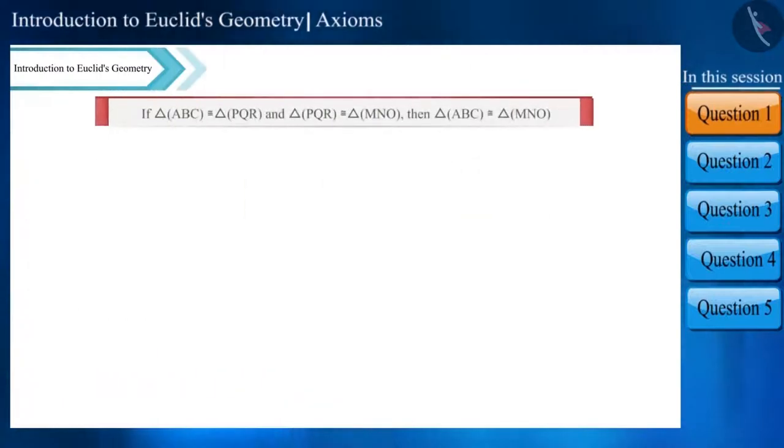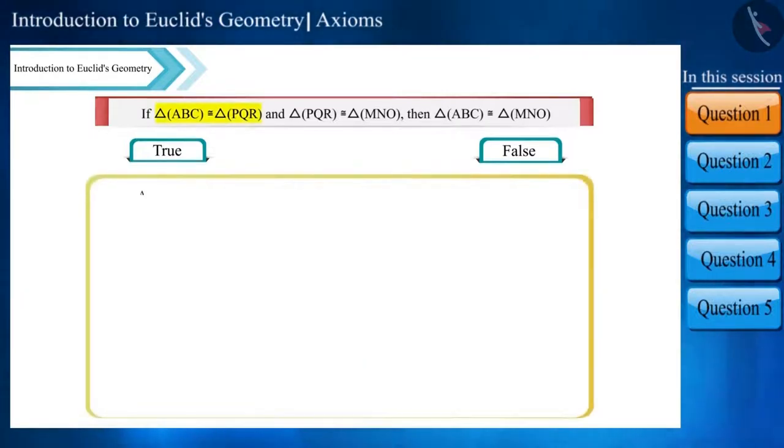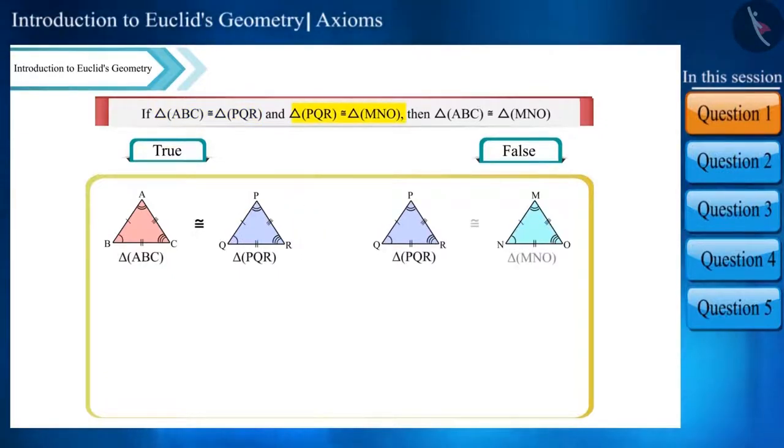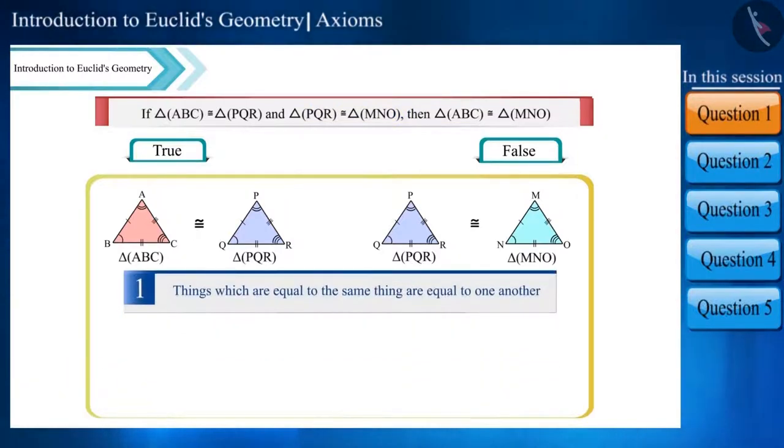Let's start with the question: Is the given statement true or false? In this, triangle ABC is congruent to triangle PQR, and triangle PQR is equal to triangle MNO. According to Euclid's first axiom, things which are equal to the same thing are equal to one another. Hence, triangle ABC will be congruent to triangle MNO, and the statement is true.